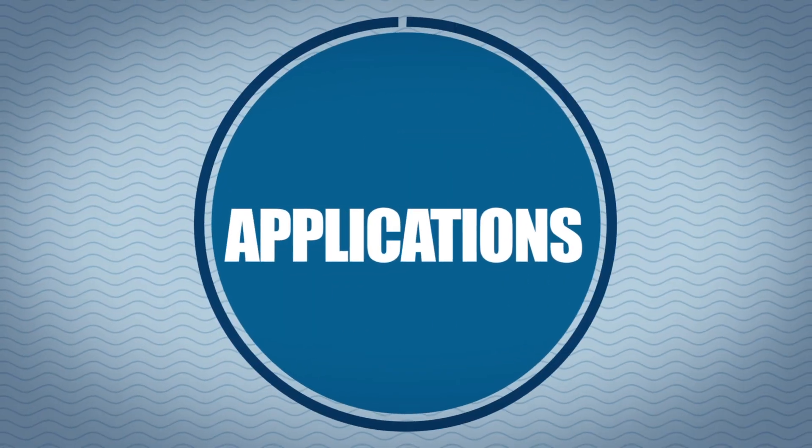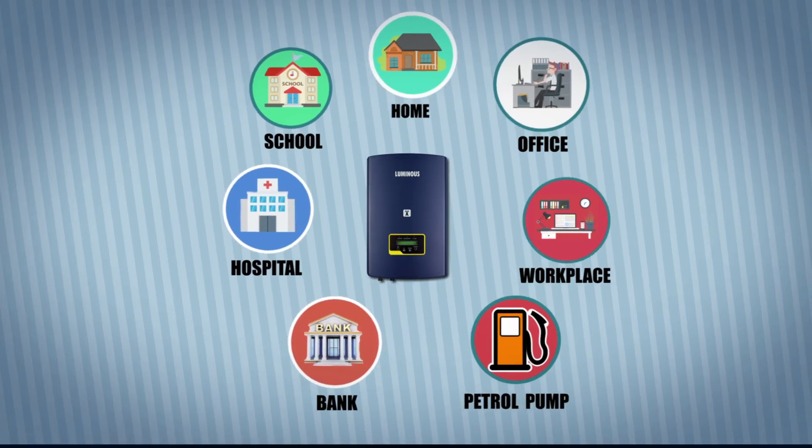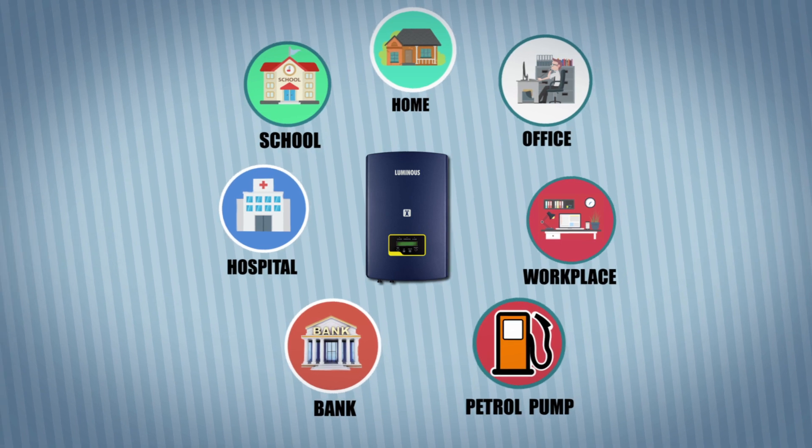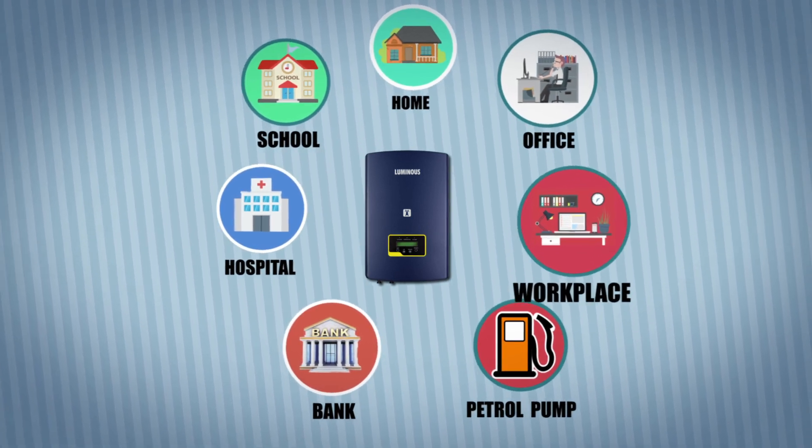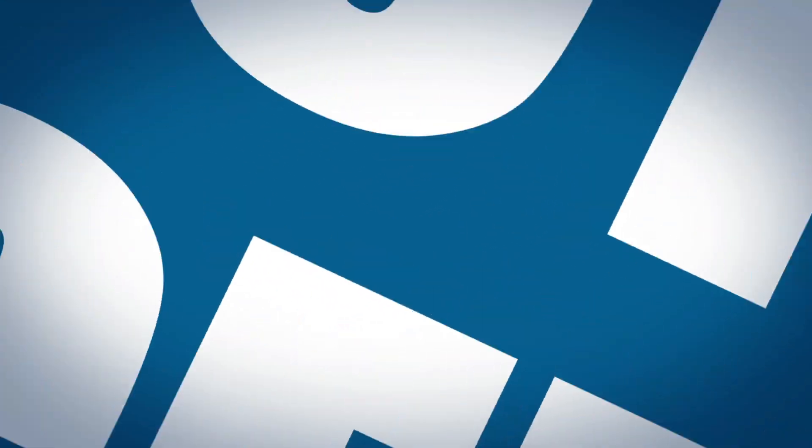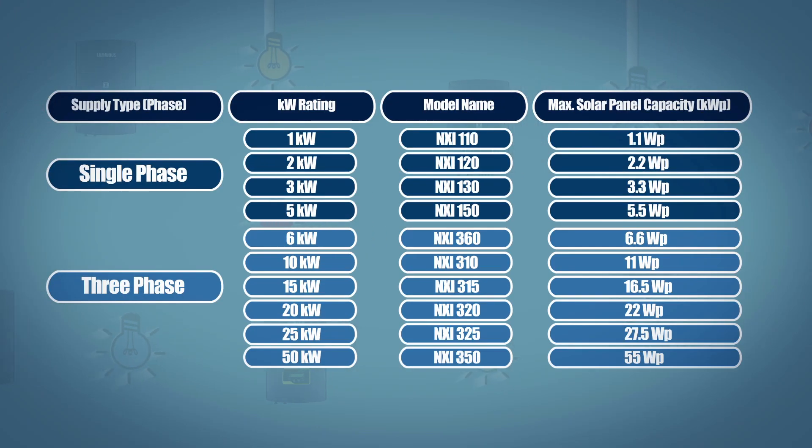Application. Luminous Grid Tie System is a perfect solar solution for your home, office and other workplaces. Selection Procedure. Luminous Grid Tie Inverters comes in Single Phase and Three Phase starting from 1kW to 50kW.